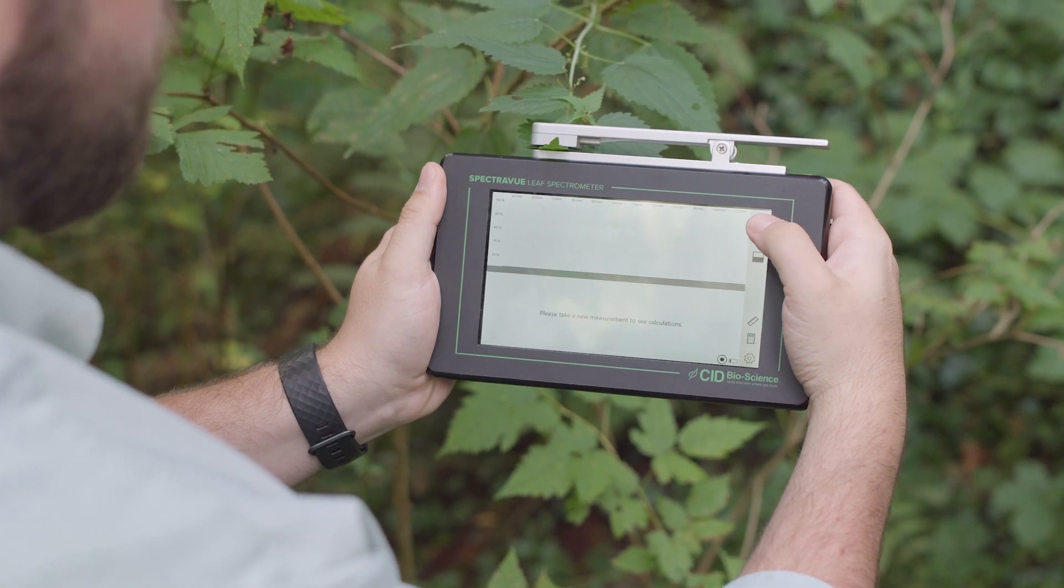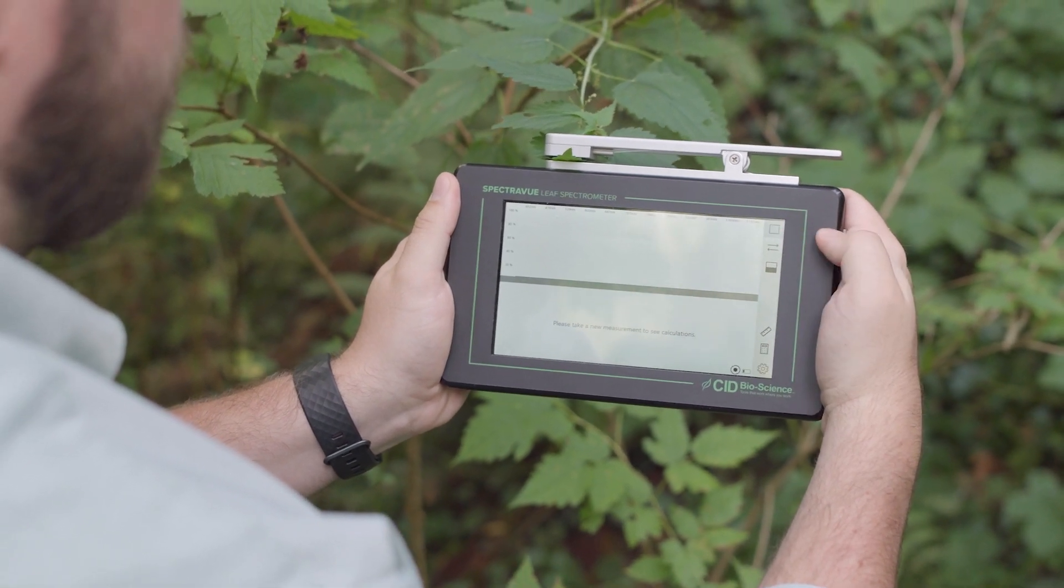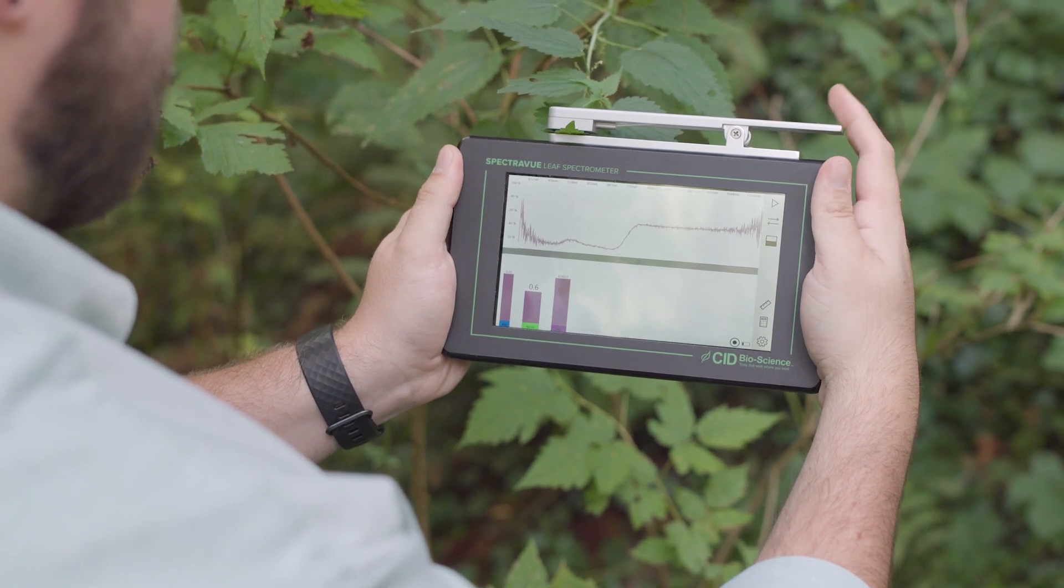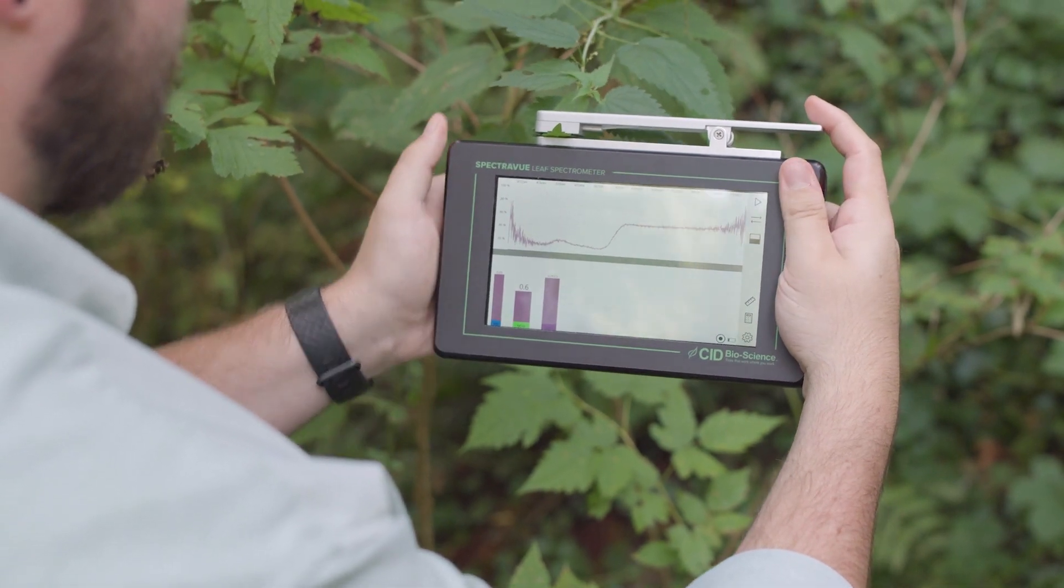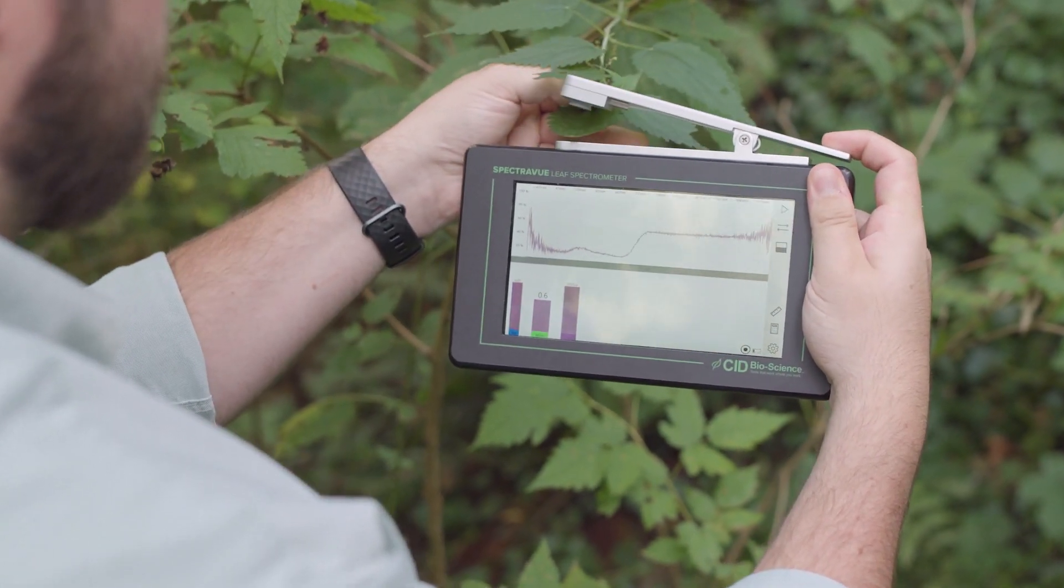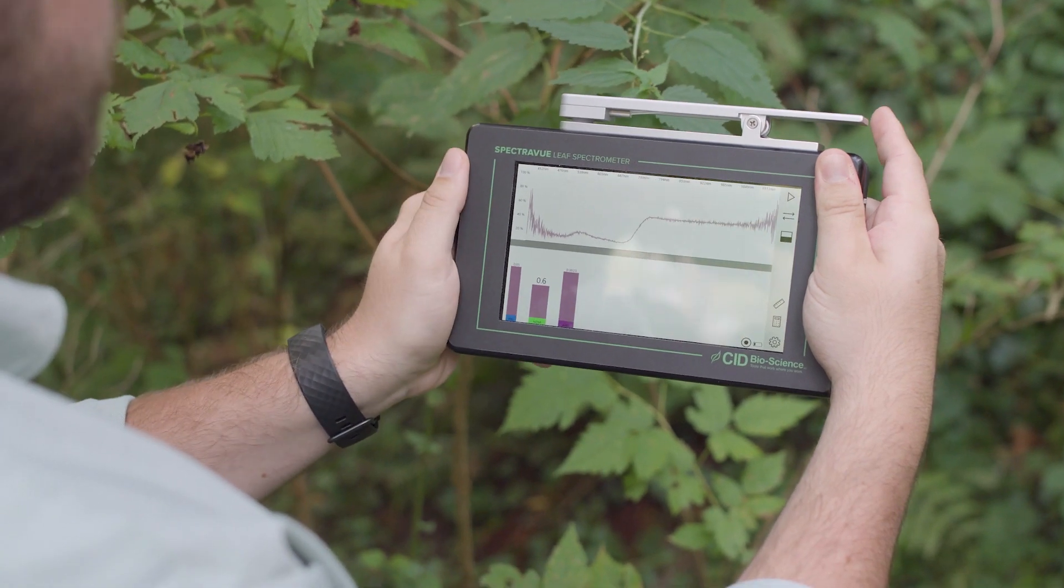So we're going to press the scan button, which is a play symbol. Now the scan is done after one second. I can remove the leaf by unclamping it. That was a healthy leaf.